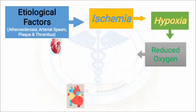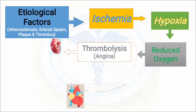Most importantly, thrombolysis begins to occur. Because of thrombolysis, angina is seen and pain is seen. Thrombolysis means small clot formation — small blood clots start to form.